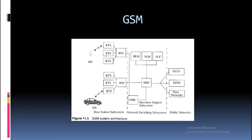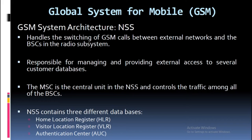Global System for Mobile (GSM) system architecture — NSS (Network Switching Subsystem): handles the switching of GSM calls between external networks and the BSCs in the radio subsystem, and is responsible for managing and providing external access to several customer databases. The MSC is the central unit in the NSS and controls the traffic among all of the BSCs. The NSS contains three different databases: Home Location Register (HLR), Visitor Location Register (VLR), and Authentication Center (AUC).